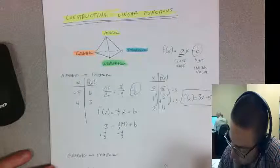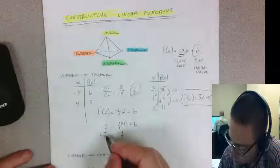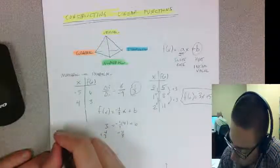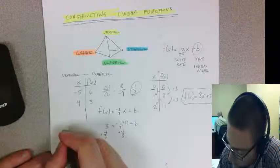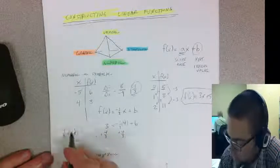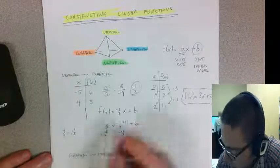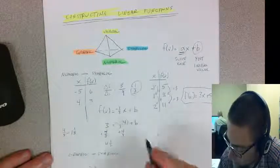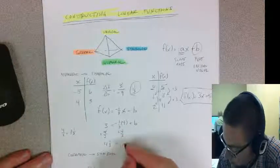Four-thirds is one and one-third, so four-thirds plus three equals four and one-third. If I turn that into an improper fraction, that's twelve-thirds plus one-third, which is thirteen-thirds equals b.